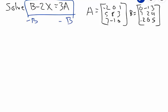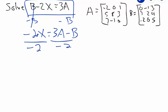Let's subtract b on each side to get rid of it from the left-hand side, giving us negative 2x is equal to 3a minus b. Now, in order to get x by itself — that's negative 2 times x — the opposite of multiplication is division. So we divide by negative 2 on each side, and x is equal to 3a minus b over negative 2.